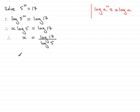If you work this out on your calculator, what you should find is 1.76037 and so on. So if we round this to three significant figures, what we end up with is x equals 1.76 to three significant figures.